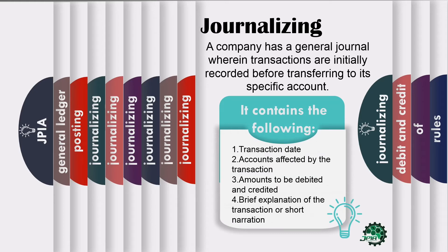The general journal contains the following: the transaction date, accounts affected by the transaction, amounts to be debited and credited, and a brief explanation of the transaction or short narration. The general journal is called the book of original entry and it is the simplest type of journal.